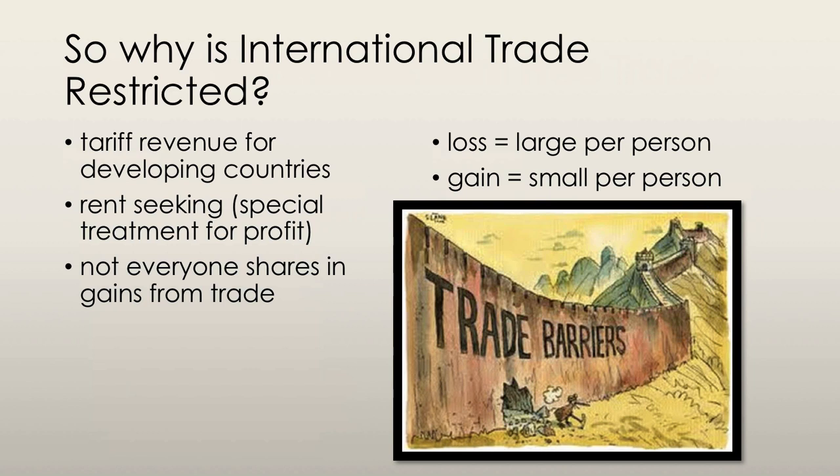International trade activities, however, are properly recorded and can thus be taxed much more easily. Another reason for restricting international trade is rent-seeking — lobbying for special treatment by the government to create economic profit for certain firms.